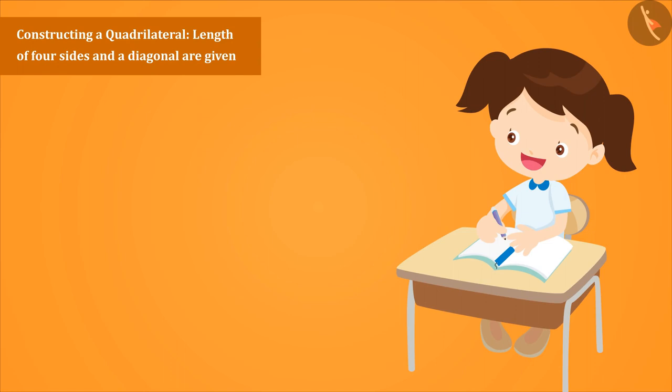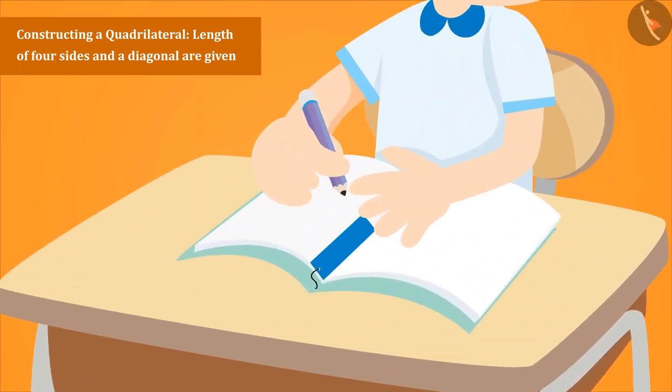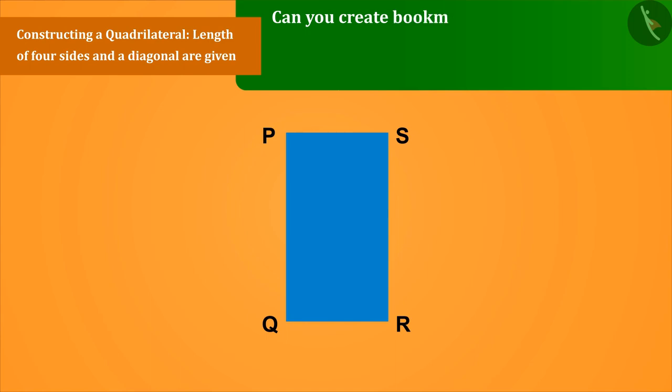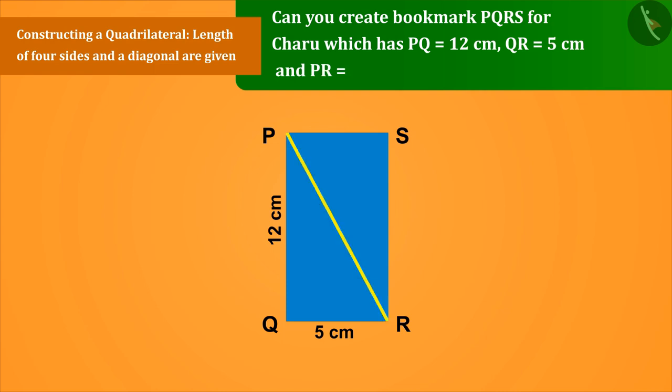Charu is reading a book for which she wants to make a rectangular bookmark like the figure shown below. Charu thinks that she will rotate the bookmark and tie ribbon in it. Can you create bookmark PQRS for Charu which has PQ equals 12 centimeter, QR equals 5 centimeter, and PR equals 13 centimeter?